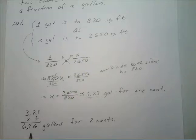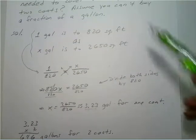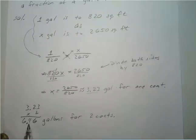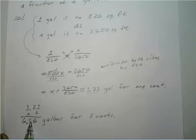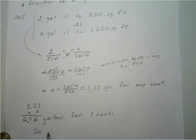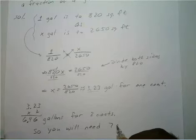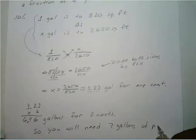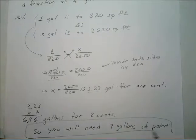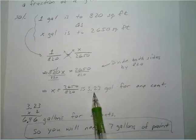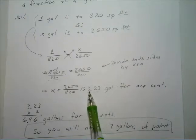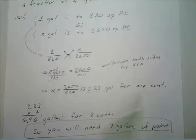Now remember, you can't buy a fraction of a gallon — there's no way you can buy 0.46 of a gallon. So we have to round up to the nearest gallon, meaning you will need seven gallons of paint for two coats. If you were just doing one coat you would need four, because you can't get 0.23 gallons. That's your final answer.